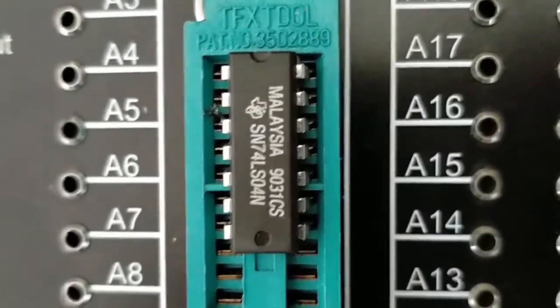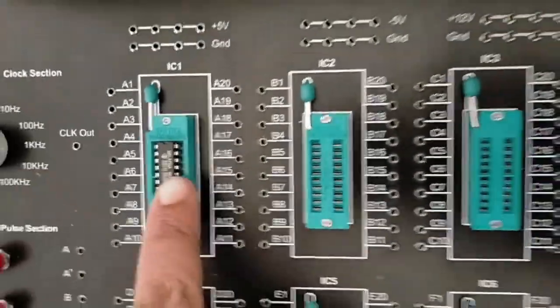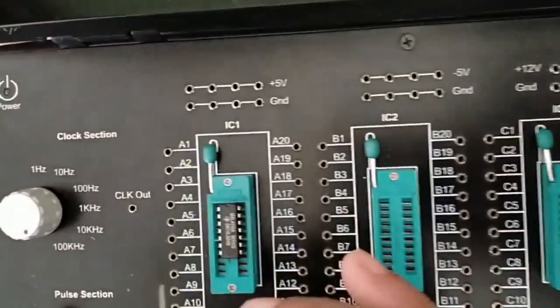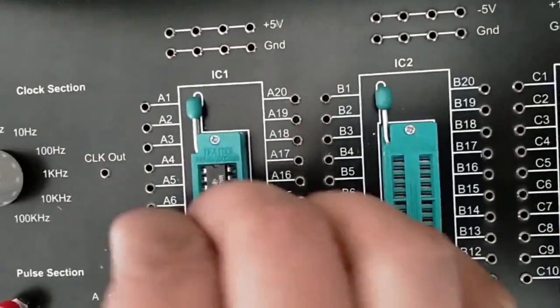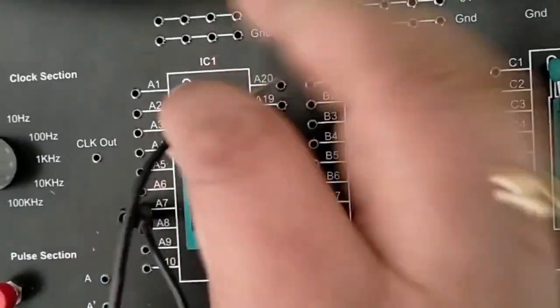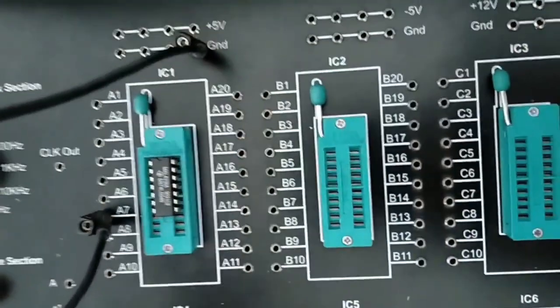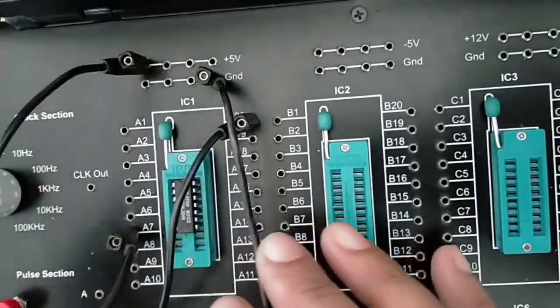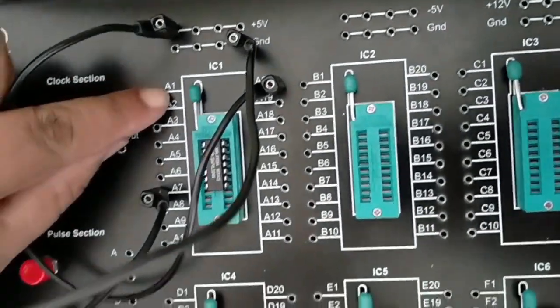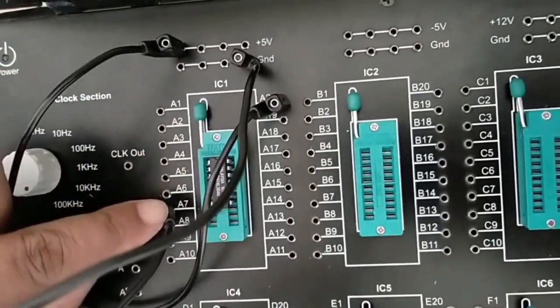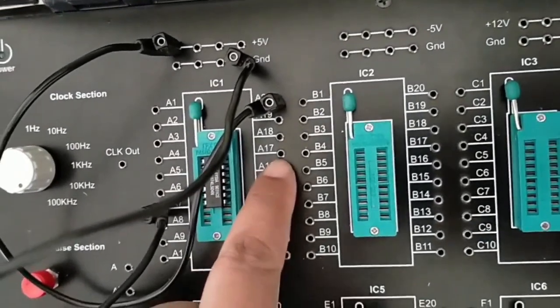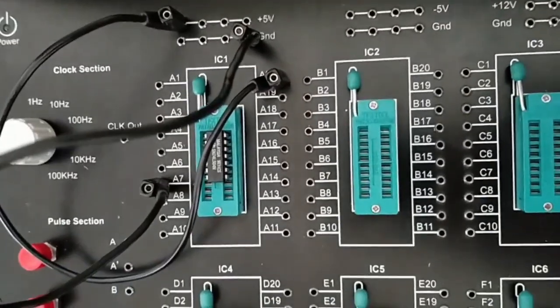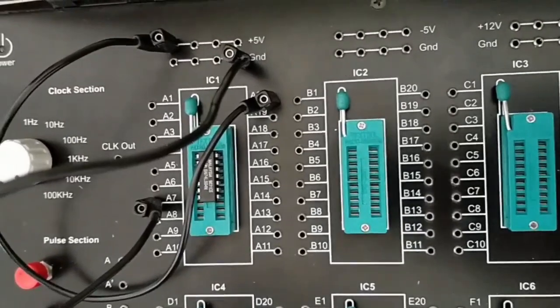The next step is: at pin number 7 we will connect ground, and at pin number 14 we will take the supply level. Let me show you how to count the pins: 1, 2, 3, 4, 5, 6, 7, then you take a U-turn and count 8, 9, 10, 11, 12, 13, and 14. This is how the 14 pins are arranged.